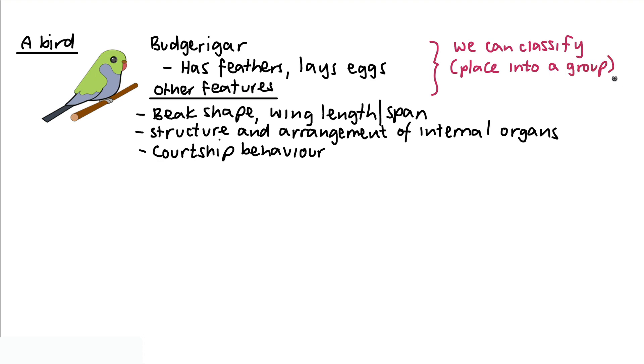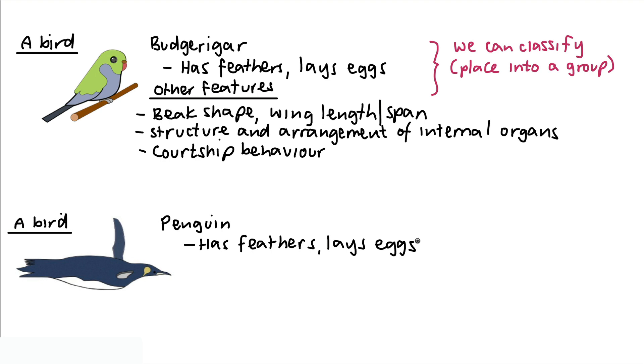We could take a look at another type of bird. This is also a bird. This is a penguin. The features that it will have in common with the budgerigar is that it has feathers and penguins lay eggs as well. But other features are going to be different. And they are quite obvious when we look at them.